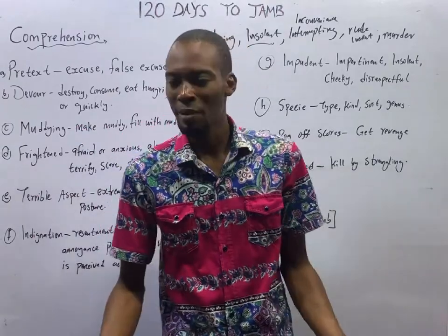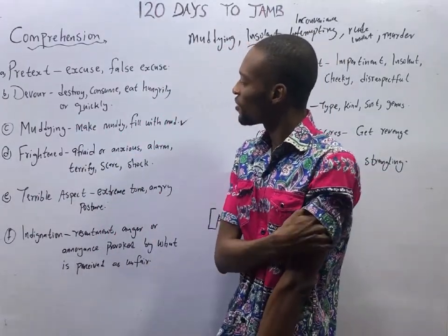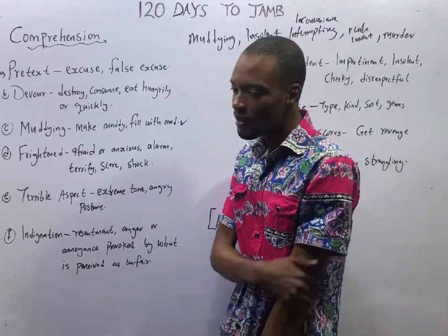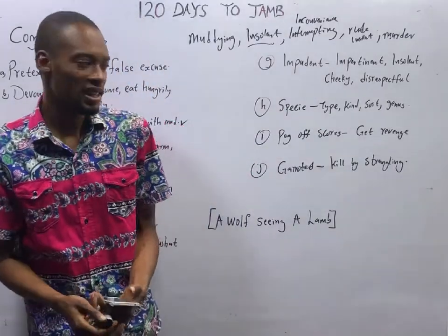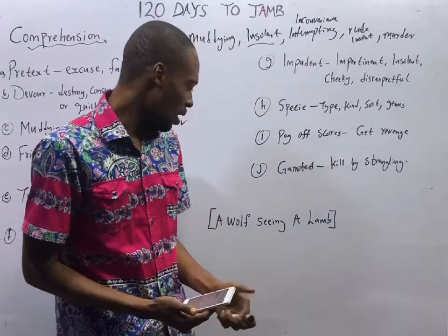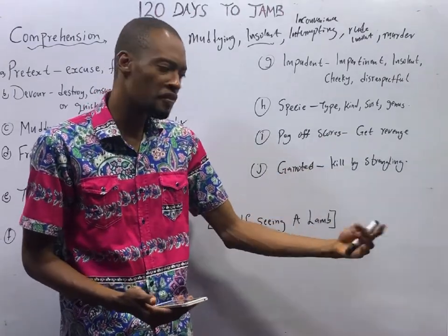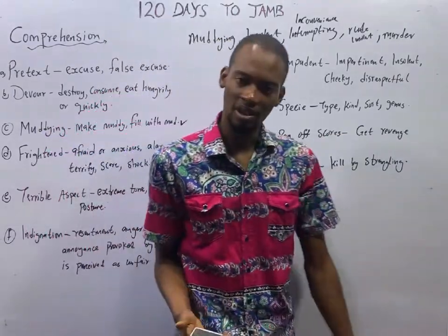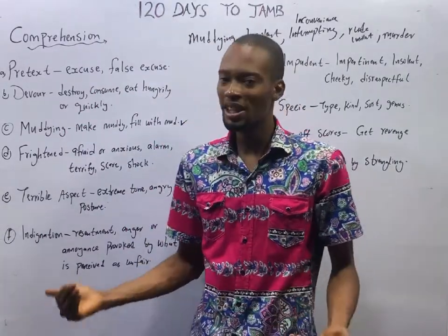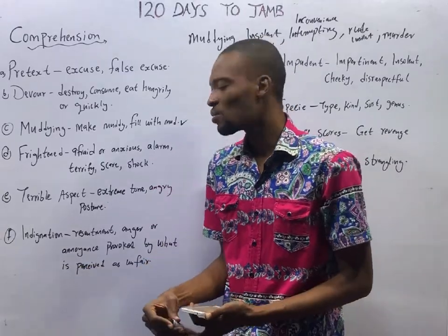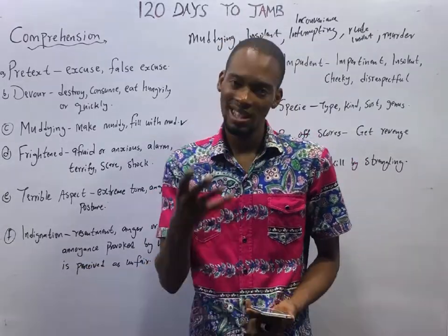Ladies and gentlemen, this brings us to the end of this episode. See you in the next episode. For your assignment: open the Flash Nenas Jam app, type 'a wolf seen a lamb,' and you will see the questions. Go through them over and over again and make sure you understand. If you are confused anywhere, reach me on any of my social handles — I am more than available to assist you. See you in Episode 8.